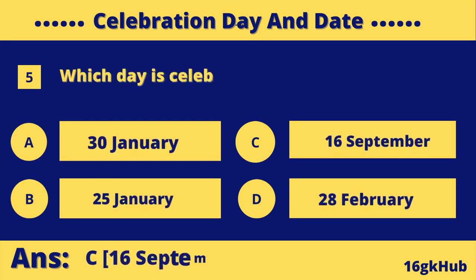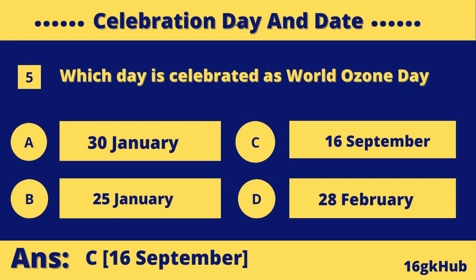Which day is celebrated as World Ozone Day? Option A: 30th of January. Option B: 25th of January. Option C: 16th of September. Option D: 28th of February. The correct answer is Option C: 16th of September.